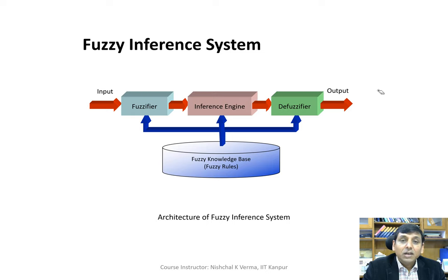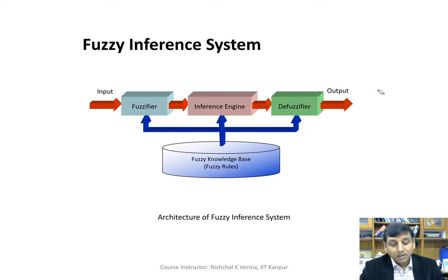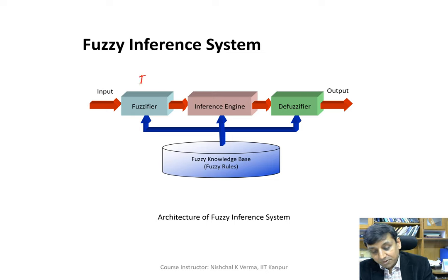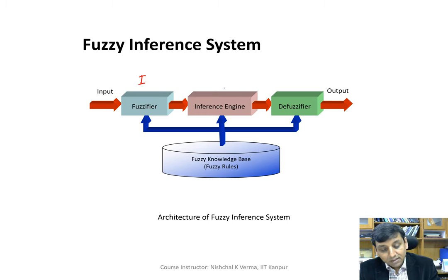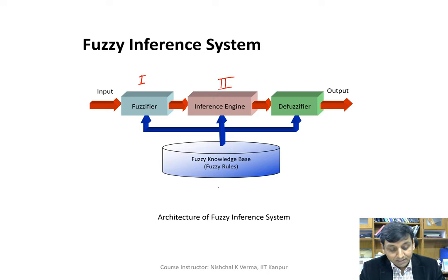Let us now understand the building blocks of any fuzzy inference system. Any fuzzy inference system has four building blocks: the first block is the Fuzzifier, the second is the Inference Engine, the third is the Fuzzy Rule Base, and the fourth is the Defuzzifier.